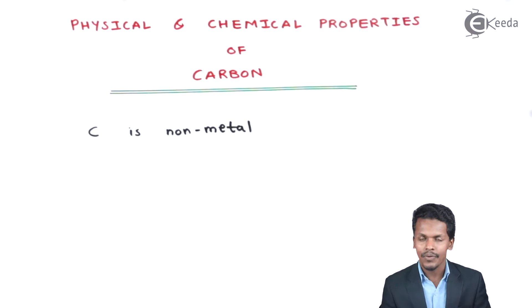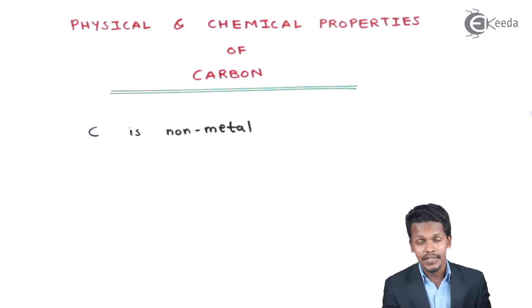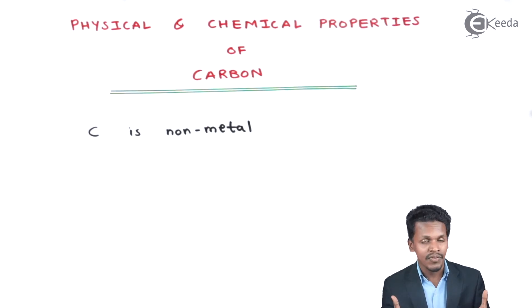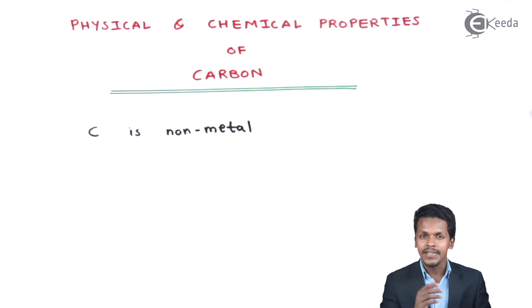Briefly, carbon is used in industries to prepare coke, and that coke is used in the purification of metals in a blast furnace. There are certain reactions related to this that come under chemical properties, so now let us discuss the chemical properties.